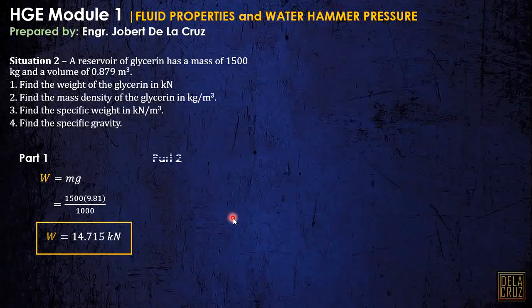For part 2, mass density of glycerin. As you can see in the unit, that is mass over the volume. Directly substitution lang: 1,500 over the volume, and we have this density.